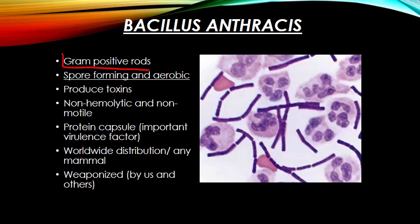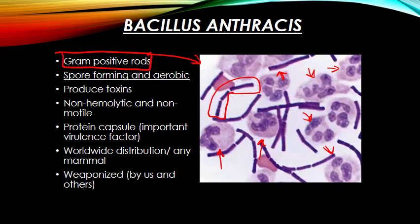Bacillus anthracis is a gram-positive rod — the cells look kind of like little train cars. It is a spore-forming aerobe that likes oxygen, and even though it produces spores, you're unlikely to see any in culture or in a patient sample, because nutrients are rich and there's no need for the organism to produce spores. What you do see is a massive number of neutrophils — it's a highly inflammatory organism, and that's actually part of how it mediates disease.